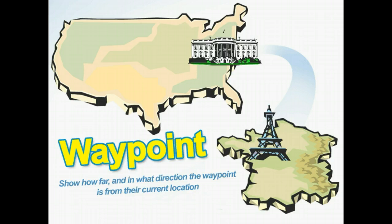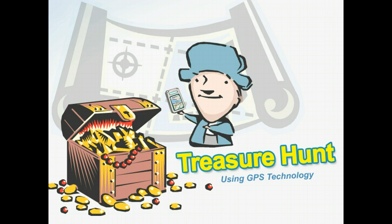By simply entering a waypoint, the GPS unit will show how far and in what direction the waypoint is from their current location. As part of a class challenge, you could also create a treasure hunt using GPS technology. A typical hunt could be done on campus with students competing in groups. Upon arriving at their first destination, students must answer the hidden question correctly in order to get the next set of coordinates and continue on the hunt. By using test review questions in the hunt, the activity becomes fun and educational.